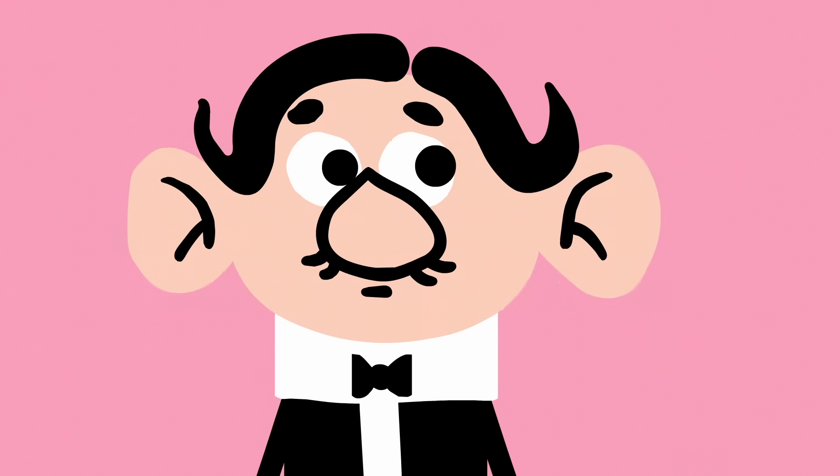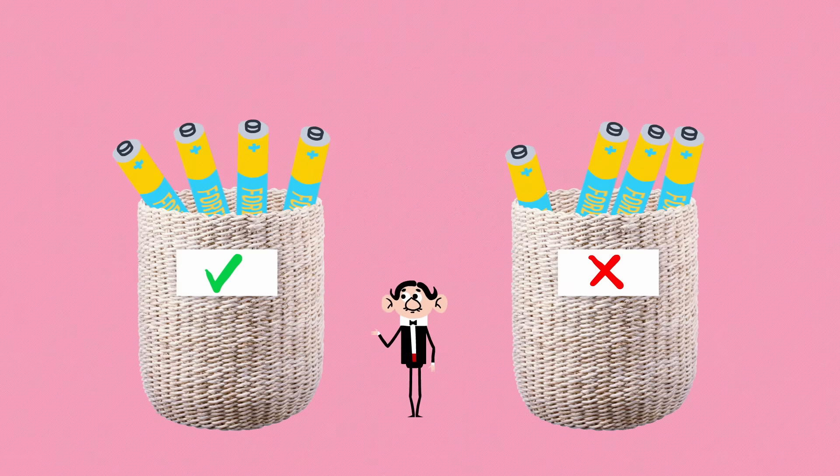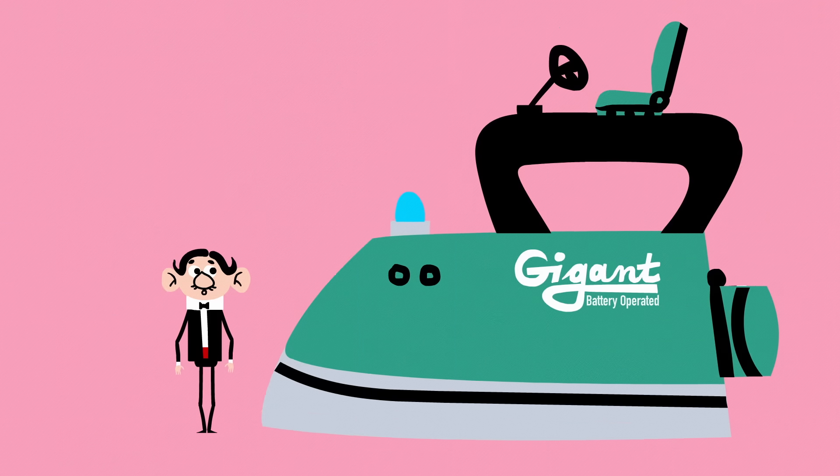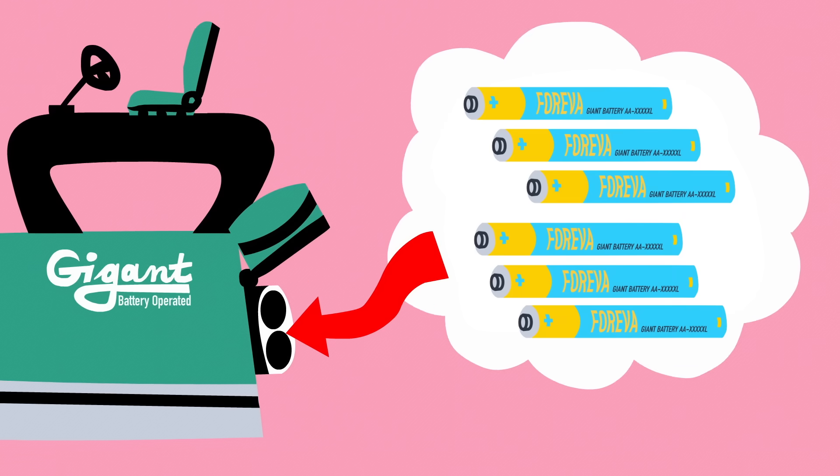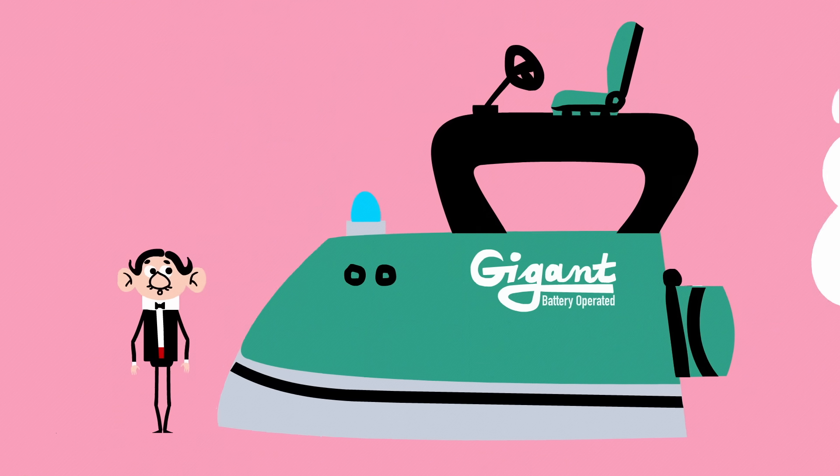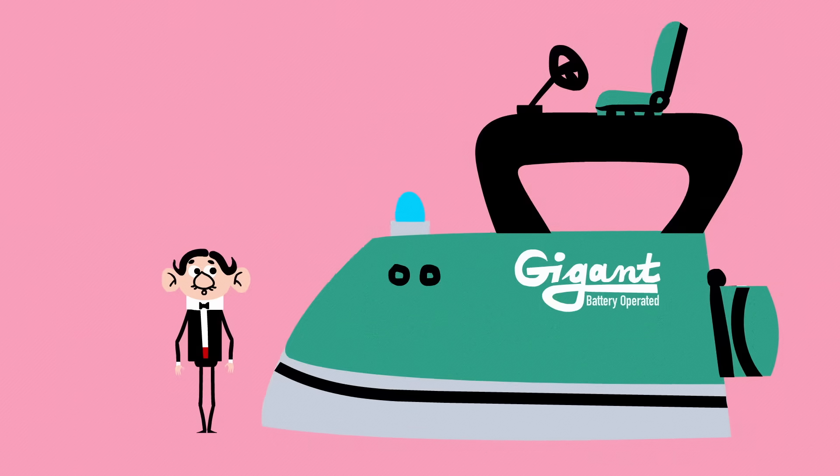Here's today's bonus riddle. Once again, there are eight batteries, four working and four dead. A new model of the giant iron has six battery slots, but it only requires four working batteries to run. How many tries do you need this time to get the iron working?